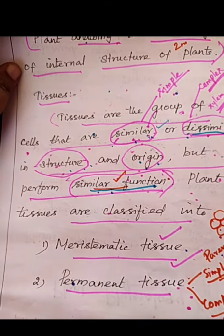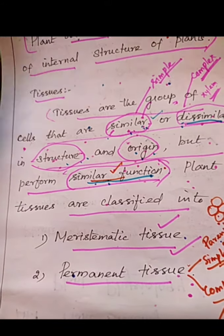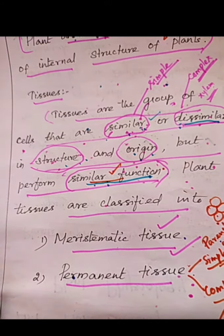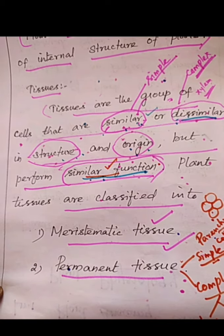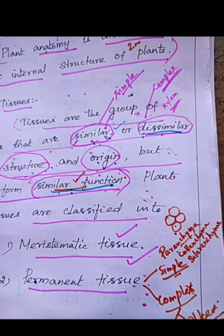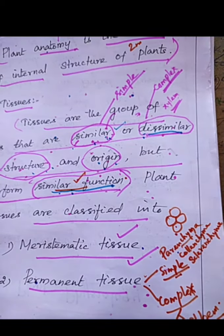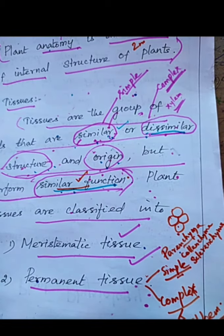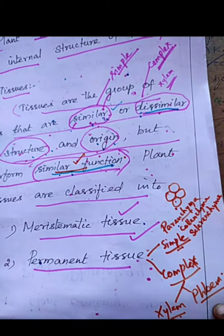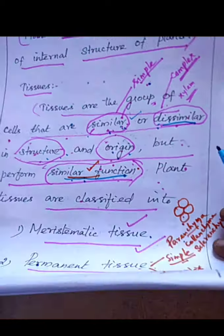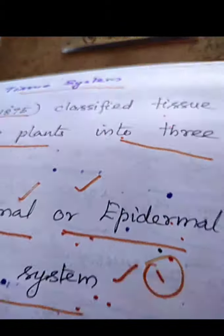Permanent tissues are of two types: simple and complex. Under simple permanent tissue, there are three types: parenchyma, collenchyma, and sclerenchyma. Under complex permanent tissue, there are two types: xylem and phloem.